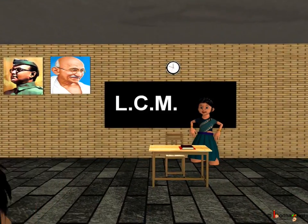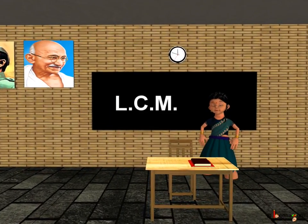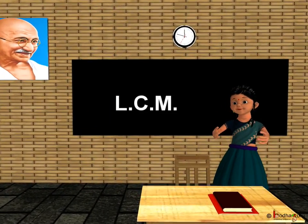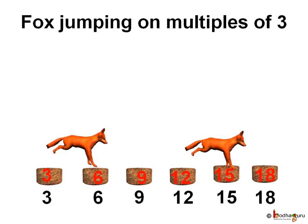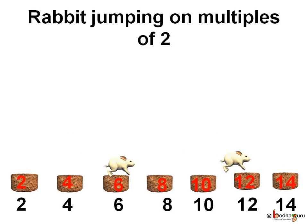Good morning children. In the last lesson, we learnt about multiples and also common multiples. Now, we shall learn about LCM. Once again, we will take the example of Fox and Rabbit.